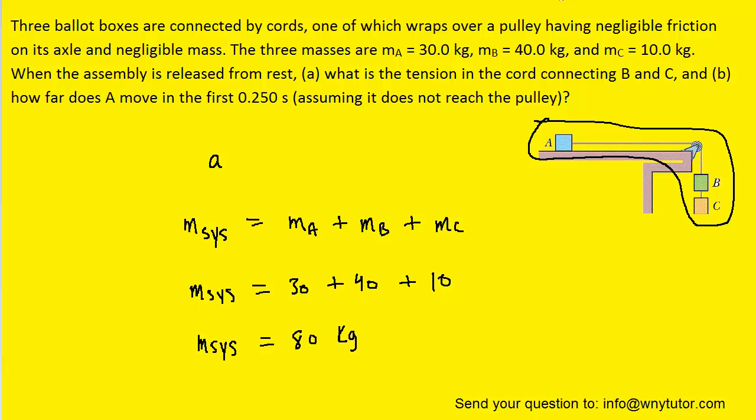Next, we need to note that the net force that's causing the system to accelerate is the gravitational force that's acting on blocks B and C only. It's very important to note that the net force is only the gravitational force acting on blocks B and C, and it's pointed downward.